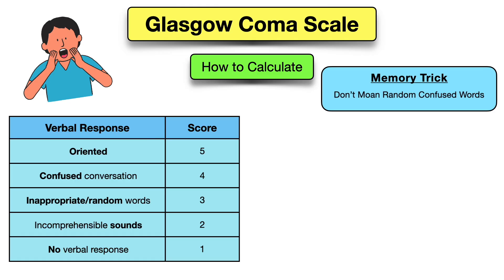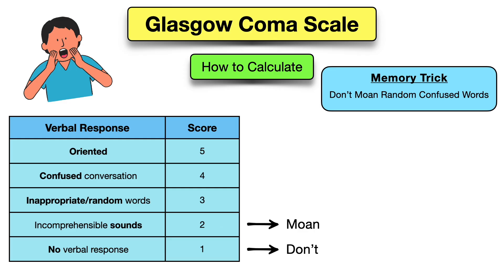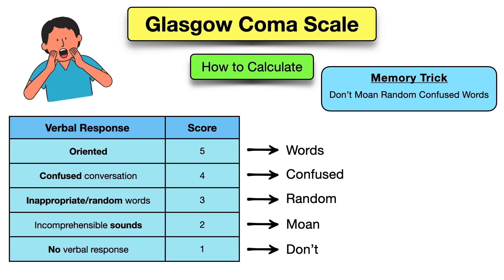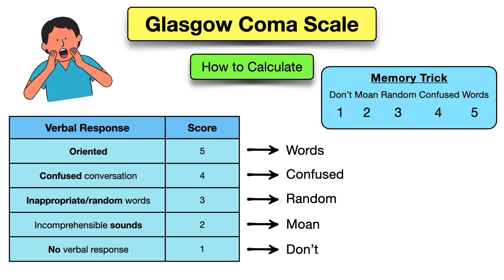You can use the memory trick mnemonic 'don't moan random confused words.' Don't represents a score of one — no verbal response. Moan represents two — moaning or incomprehensible sounds. Random represents three — random words. Confused represents four — confused conversation. Words represents five — normal words; they're oriented and conversing fine. So remember: don't moan random confused words — one, two, three, four, five.